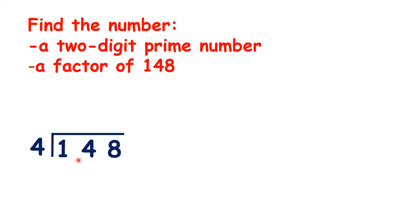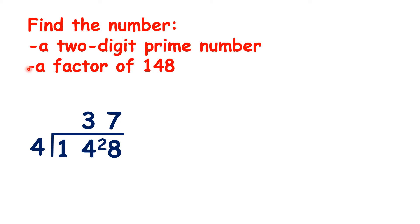But let's try one hundred and forty-eight divided by four. That gives us thirty-seven, a prime number. So thirty-seven is a prime number because it's only in the one times table and the thirty-seven times table, and thirty-seven is a factor of one hundred and forty-eight because thirty-seven times four is one hundred and forty-eight.